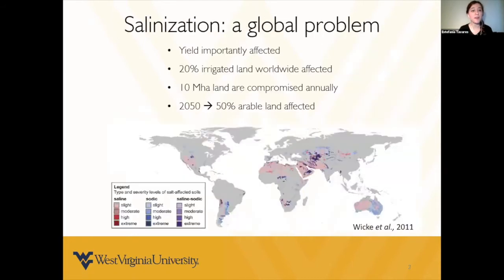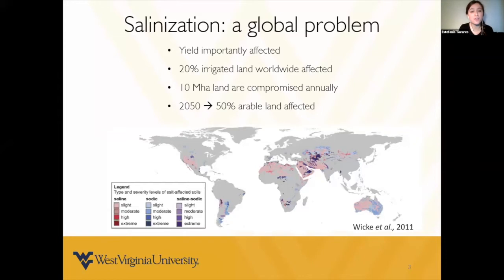In the case of biotic factors, we are dealing with salinization, which is a really big problem around the world affecting crop yields heavily. It is estimated that 20% of every irrigated land around the world is compromised by this problem, and every year we are losing 10 million hectares of this land. It is also expected that by 2050, half of the arable lands around the world will be affected by salinization.